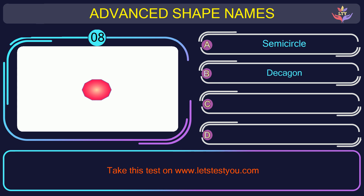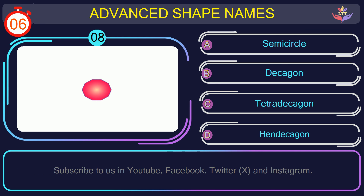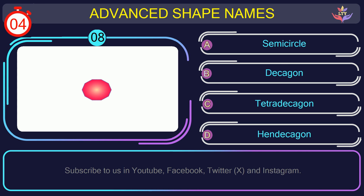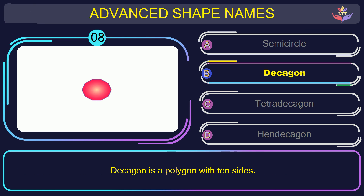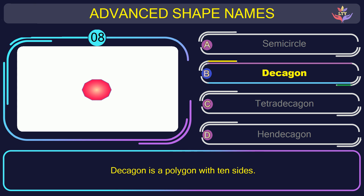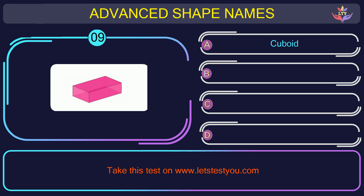Question number eight. Guess the name of the shape in this picture. The correct answer is option B. Decagon. Decagon is a polygon with ten sides.